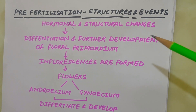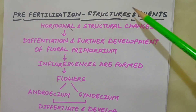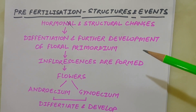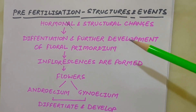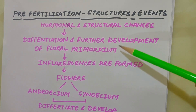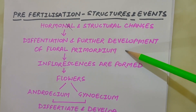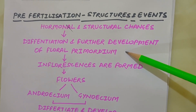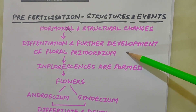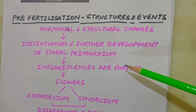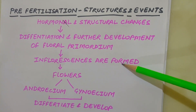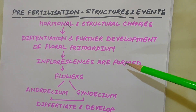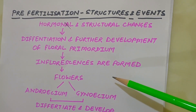Now we come to the next topic: pre-fertilization structures and events. Before fertilization, a series of events occur in the flower. The story begins with several hormonal and structural changes which lead to differentiation and further development of floral primordium. Floral primordium is a group of cells or tissue which give rise to the flower, and then inflorescences are formed. Inflorescence means the modified part of the shoot where flowers are formed, beginning as floral buds and then flowers.